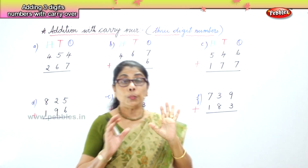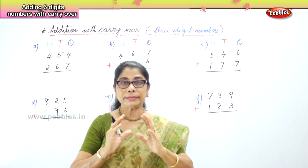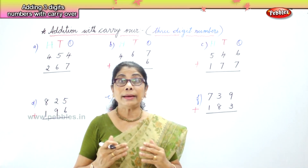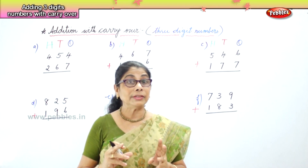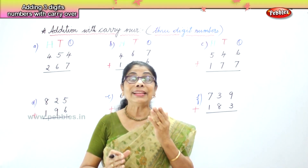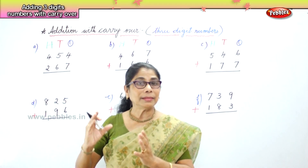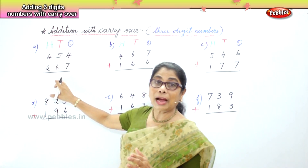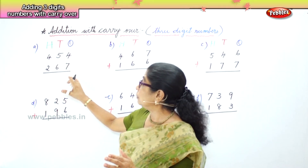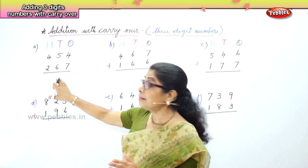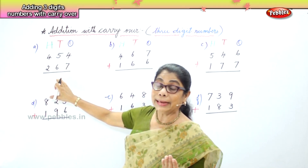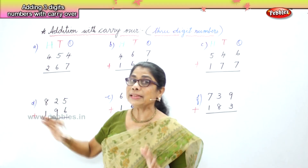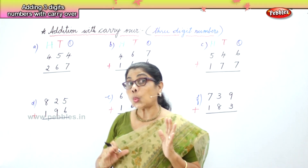We have to first look at the ones place, add the ones together, and if it is more than 9 — so you get 10, 11, 12 — if it is 10 you have 0 ones and 1 ten to carry over. Then you go to the tens place, add and see how many tens. If it is more than 10, carry over to the hundreds place. Let's look at it slowly, one sum at a time.